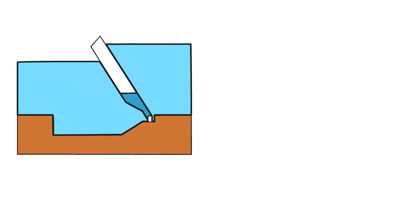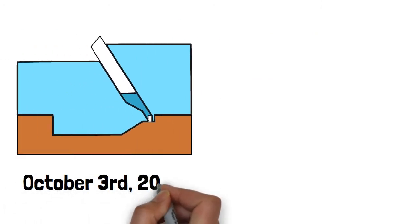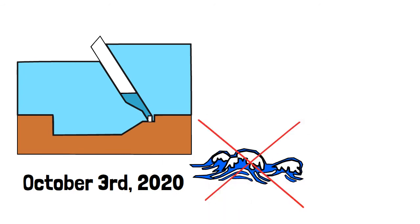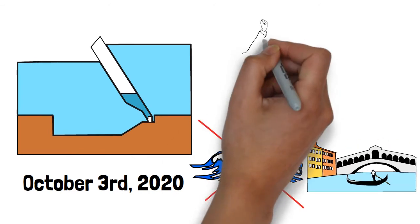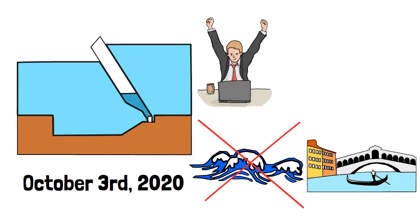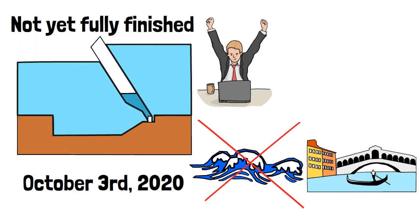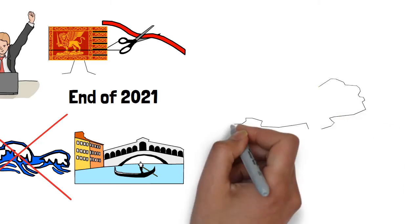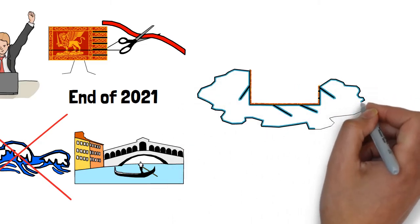The system was first put to test on October 3rd of 2020, during a high tide event which helped to prevent flooding within the city. Despite this success, the system isn't actually finished yet, with completion expected to be at the end of 2021, and will hopefully provide a solution to Venetian soggy bottom.